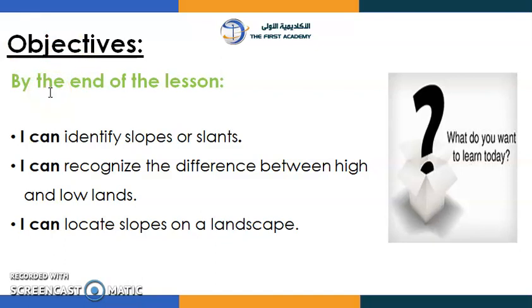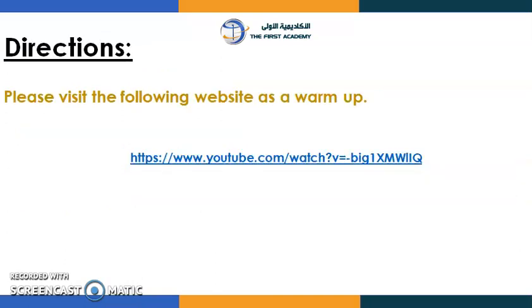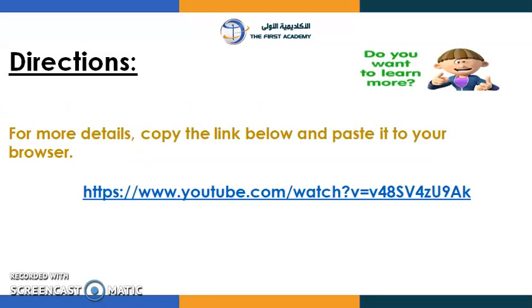So everyone, let's go over here to talk about the objectives. By the end of the lesson: I can identify slopes or slants; I can recognize the difference between high and low lands; and I can locate slopes on a landscape. Excellent! We have two videos — let's watch them. Click on the link below.